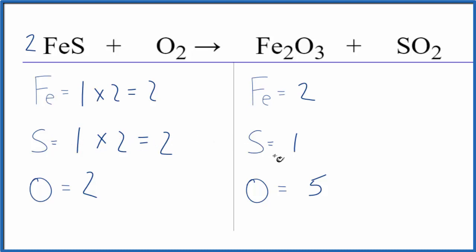Let's fix the sulfurs. Put a two here. We have one times two. That'll give us two. Then we need to update the oxygen. So we have three plus two times two is four. That gives us seven.